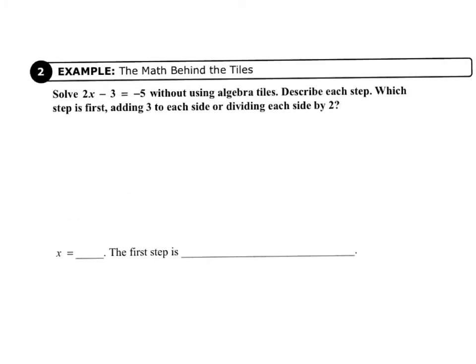Now we're going to look at example 2, which shows us the math behind the tiles. So if you weren't using algebra tiles, this is how you would solve the problem in example 1. So it says, solve 2x minus 3 equals negative 5 without using algebra tiles, and describe each step. Which step is first, adding 3 to each side, or dividing each side by 2?